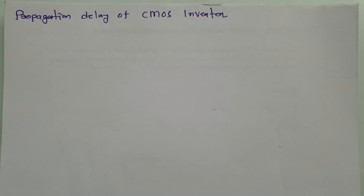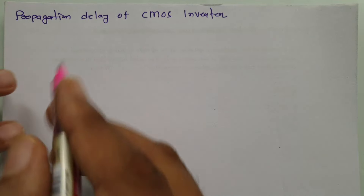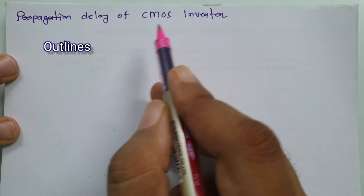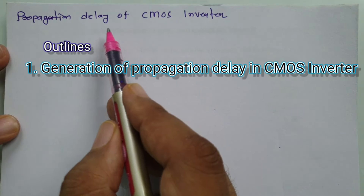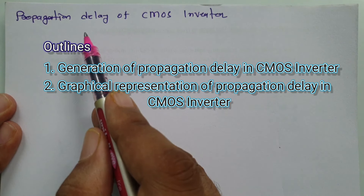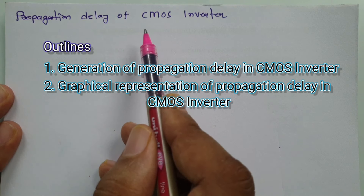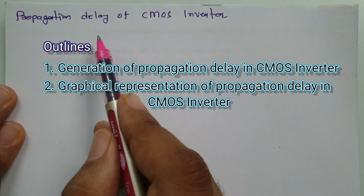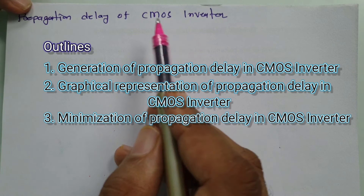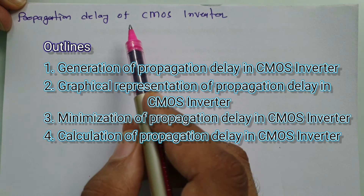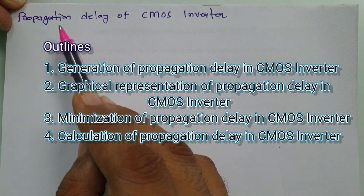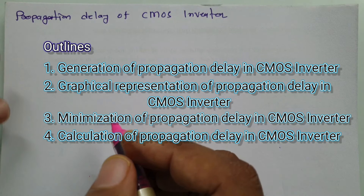Welcome to the VLSI lecture series. I, Professor Ritesh Dholakya, am going to explain propagation delay of a CMOS inverter in this video. To understand propagation delay, I'll first explain how it occurs, then provide a graphical explanation of high-to-low and low-to-high propagation, followed by how to minimize it, and finally how to calculate it. These are the session outlines.